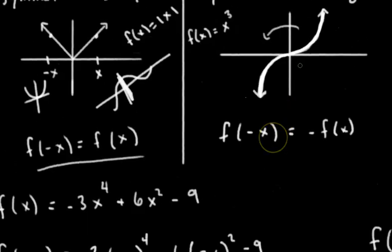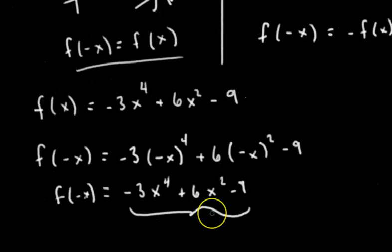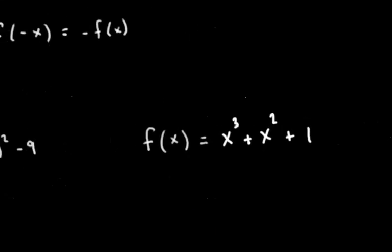And then an odd function, you would do the same thing. So let's check. Here's another function. Let's see if this is odd. We don't know what it looks like just given the function, so we can't check the symmetry. So let's check by plugging in. Remember, I said the process is always the same - you just plug in negative x.